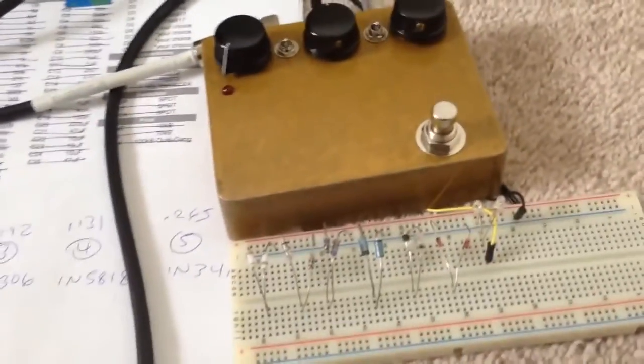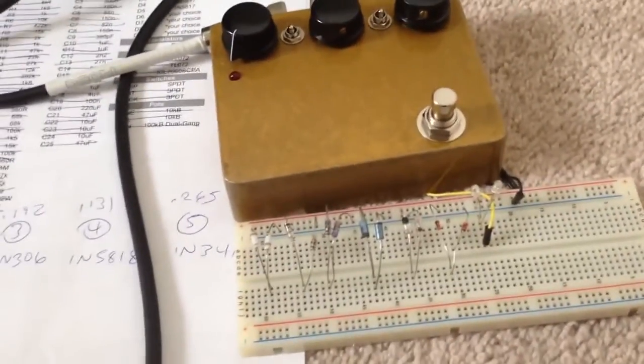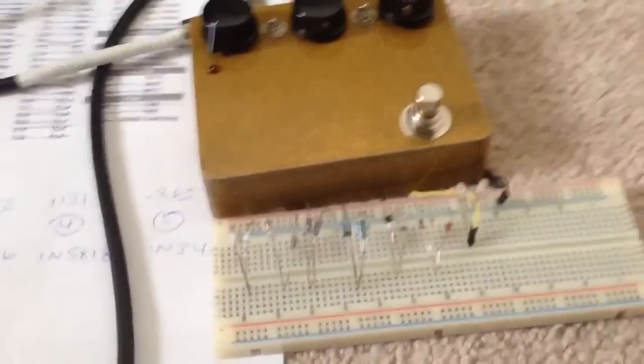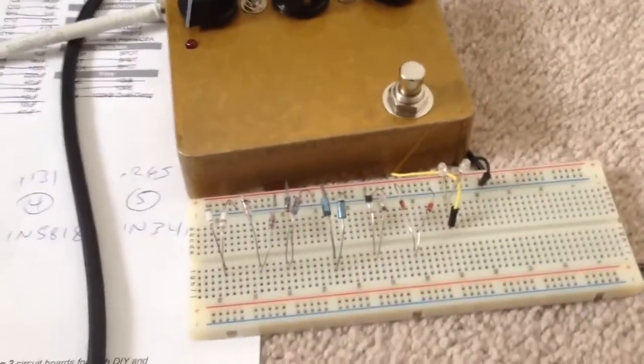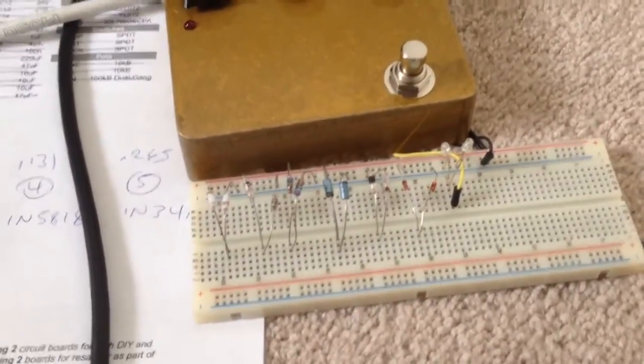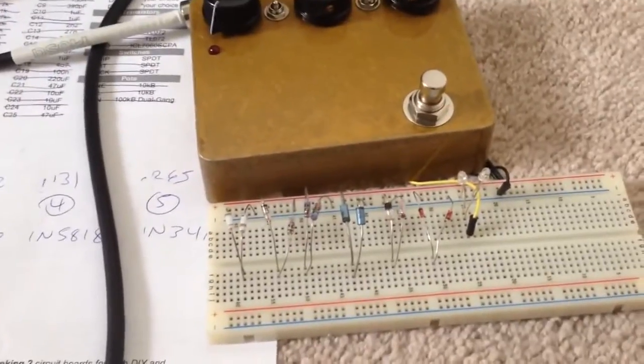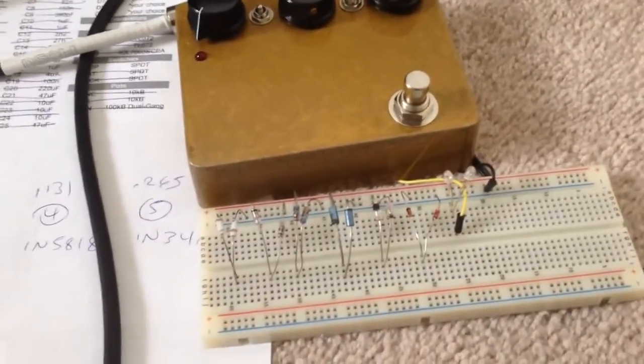Last weekend I put together this Klon clone using the MadBean SunKing 2 board. Haven't yet decided on the diode, so what I want to do here is try a bunch of different diodes I had laying around, seeing how they sound in the circuit.